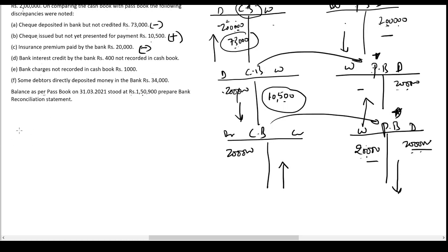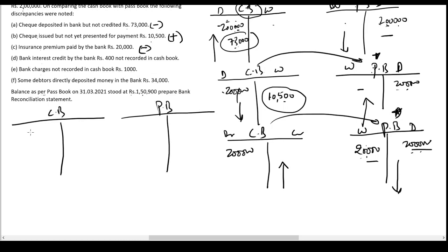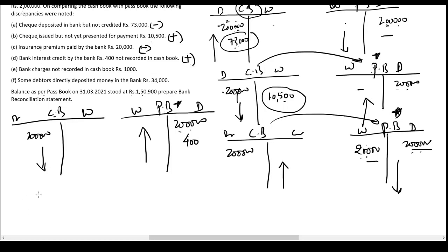Bank interest credited by the bank — 400, not recorded in the cash book. There is a deposit on the passbook side so the passbook balance increases, making the cash book balance relatively lower. To make the cash book equal to the passbook, I have to increase the cash book balance by 400 — so I'll put a plus sign here.